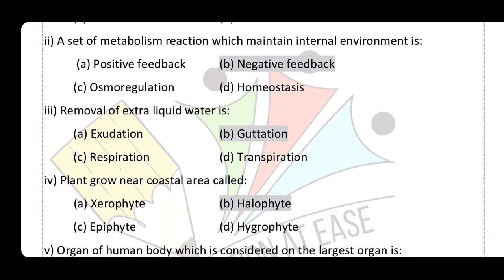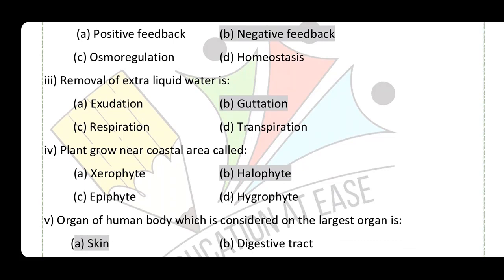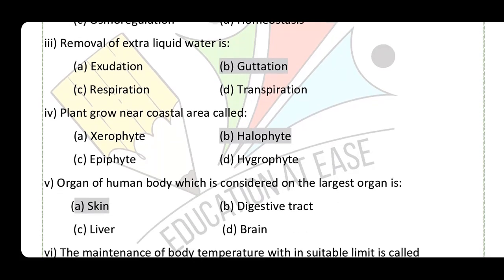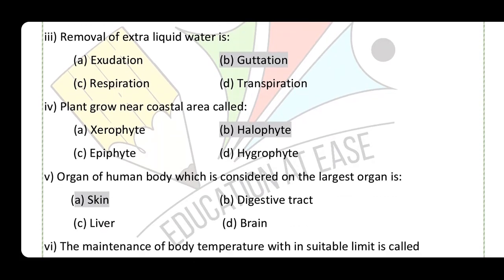Removal of extra liquid water - the process of removing extra liquid water is called guttation in plants. Plants that grow near coastal areas are called halophytes.